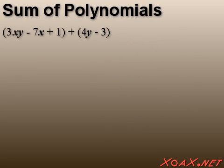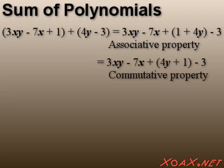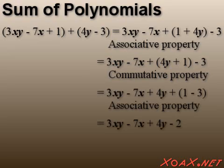To demonstrate a slightly more complex example, we take 3xy-7x+1 and add it to 4y-3. Adding these together and combining like terms, we get 3xy-7x+4y-2. This example illustrates that polynomials do not need to have matching like terms. In this example, the only terms that we can combine are the constant terms.